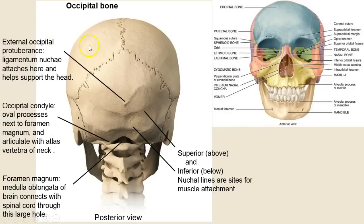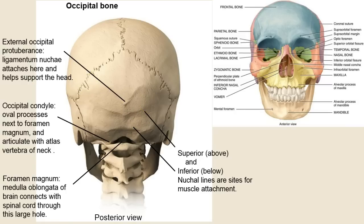The occipital — now we're looking at a posterior view. Here are the parietals, which are paired, but there's only one occipital. Here's the 'wisdom bump' — if you reach back right now and feel that knob in the back of your skull, that's the external occipital protuberance, where ligaments such as the ligamentum nuchae attach. The condyles are going to articulate with the atlas — think of the historic story of Atlas carrying the world on his shoulders.